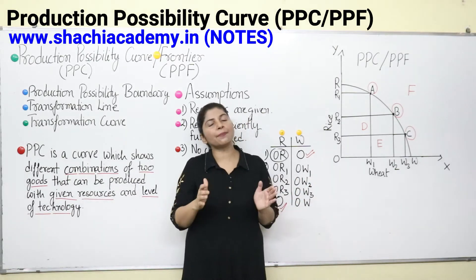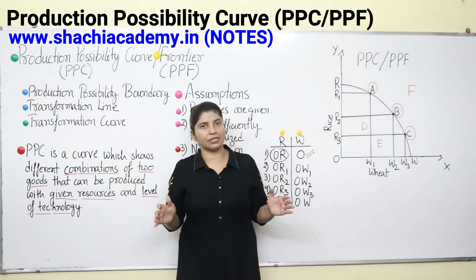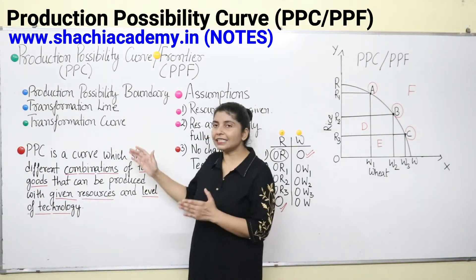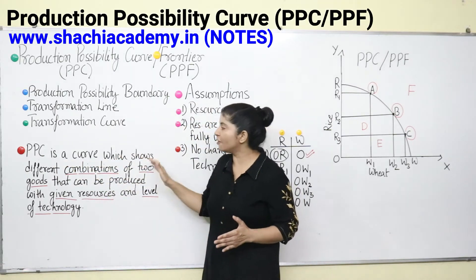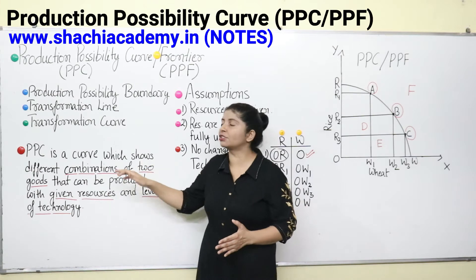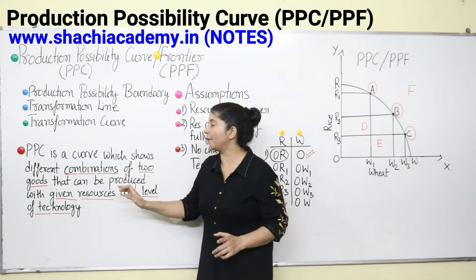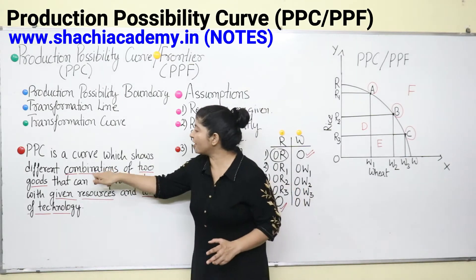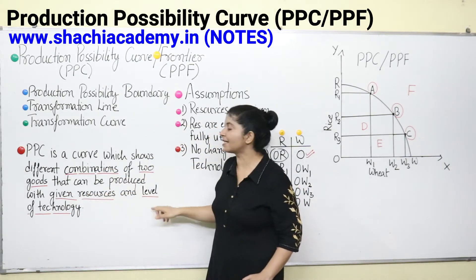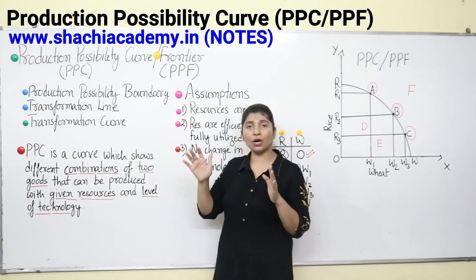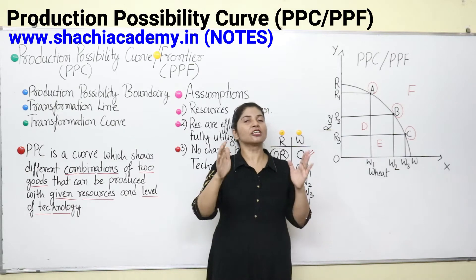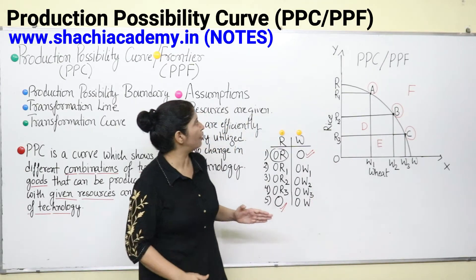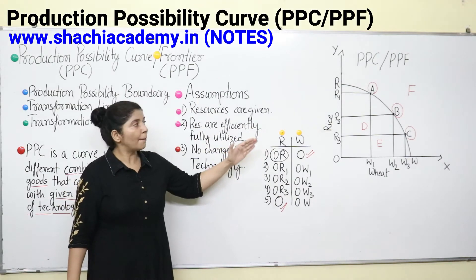In reality, any nation — like India — produces an immense number of goods and services, thousands and thousands. So for the sake of simplicity, two goods have been used. PPC is a curve which shows different combinations of two goods that can be produced with given resources and level of technology. These two things are important: different combinations of two goods, with given resources and the given level of technology. We can discuss it with the help of a Production Possibility Graph, which is a graphical representation of your production possibility.